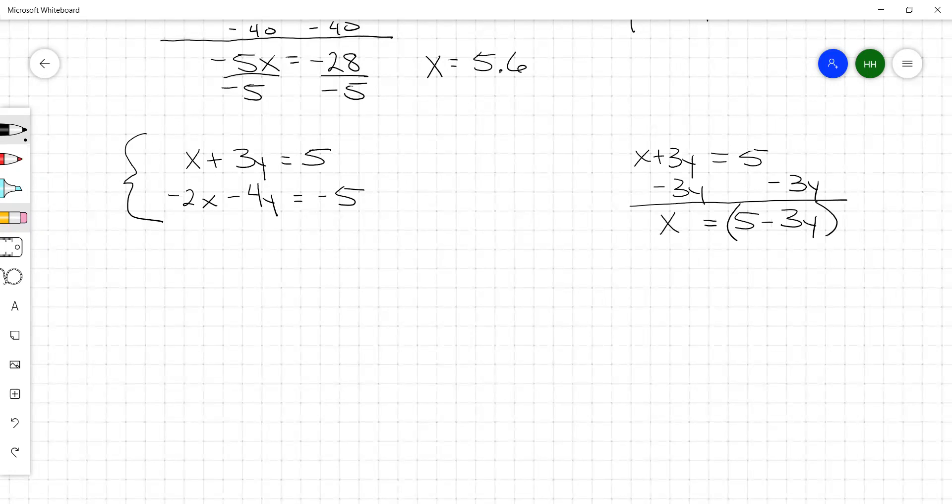Since that x is equal to 5 minus 3y, I'm going to go to the other equation. You have to go to the other equation when you substitute. And I'm going to rewrite it. Negative 2 times 5 minus 3y minus 4y equals negative 5.